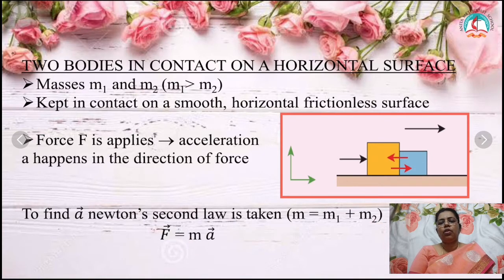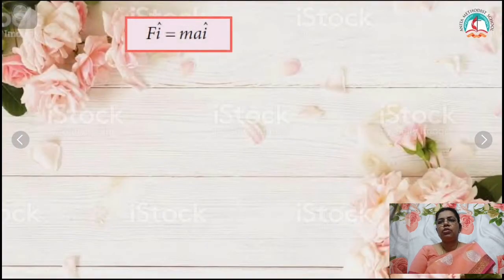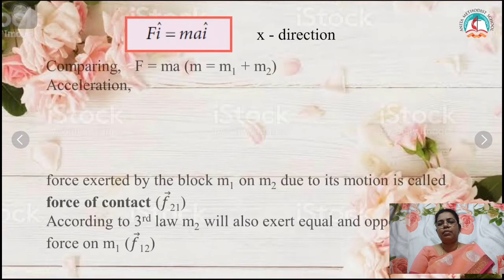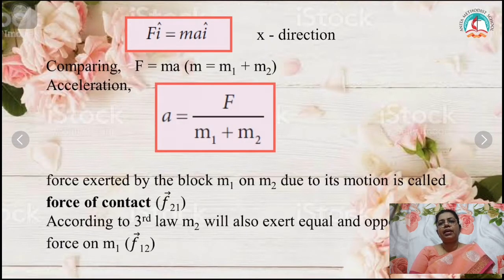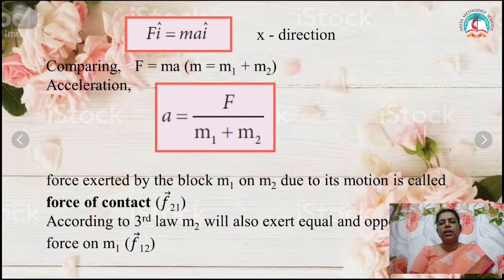According to Newton's second law, force equals mass into acceleration. Since the motion of two masses is along the positive x direction, we write F i-cap equals Ma i-cap in vector notation. By comparing, it becomes F equals M into A. Since the total mass M equals M1 plus M2, F equals (M1 plus M2) into A. Therefore, acceleration A equals F divided by (M1 plus M2).